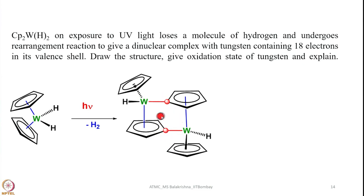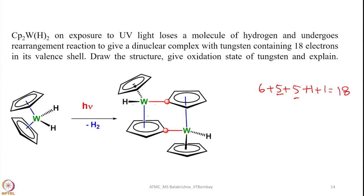In the resulting dimer, counting electrons for one tungsten using the covalent method: 6 from W, plus 5 from the η5-Cp, plus 5 from the second η5-Cp, plus 1 from the carbon (η1 bond), plus 1 from hydrogen — giving 18 electrons. The same is true for the other tungsten, confirming the structure is correct and the molecule has centrosymmetry.